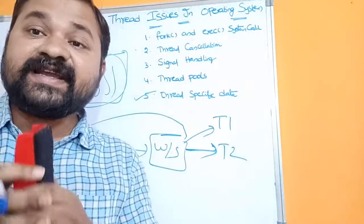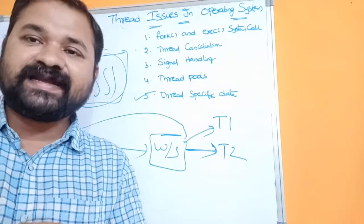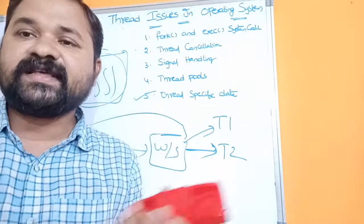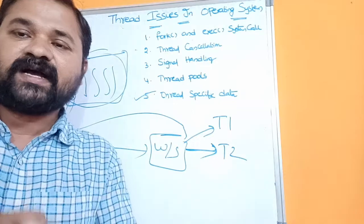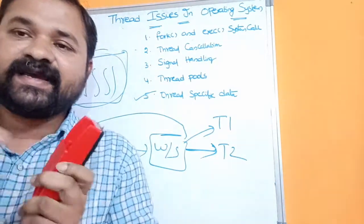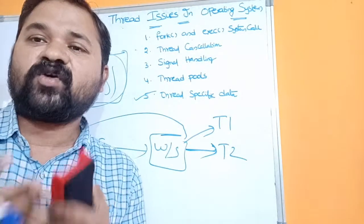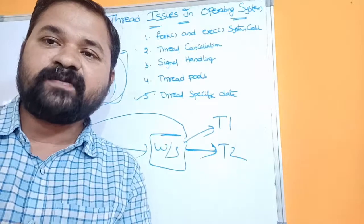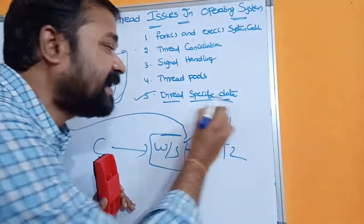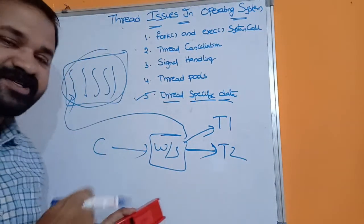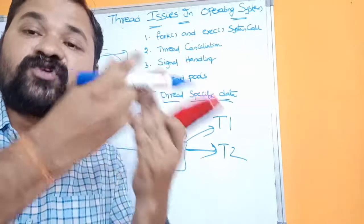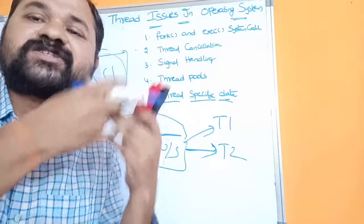The last issue is thread-specific data. In a multi-threading system, a process has multiple threads that can share data with one another. Using global variables in the data segment, one thread can read data and another thread can write data. Data sharing is a major advantage of multi-threading. However, each thread may also have its own specific data — for example, in a process with 5 threads, thread1 may use its own specific data and thread2 may use its own specific data.